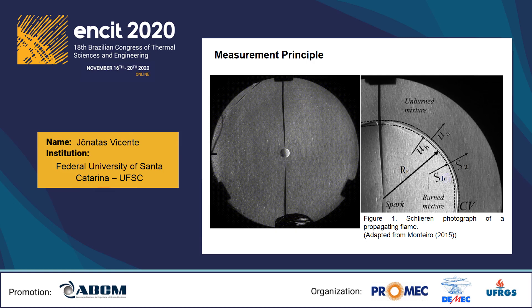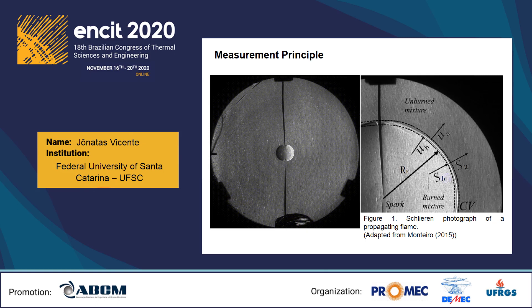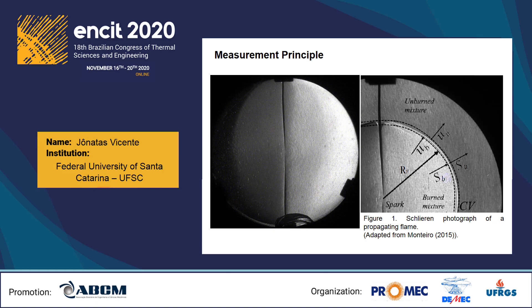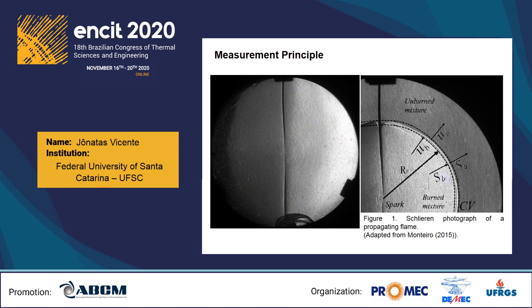Here is presented a sector of Schlieren animation and an image of a spherical outwardly propagating laminar premixed flame. The ignitors are located in the center of the reactor and at this time instant, the flame surface has a radius. It is possible to observe the region of unburned and burned mixture. In this figure, the velocities and flame speeds are identified, assuming velocities normal to the flame surface.